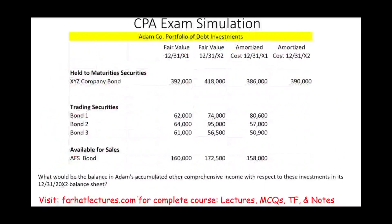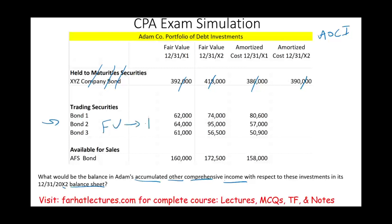Let's answer the second question: what would be in Adam's accumulated other comprehensive income with respect to these investments as of the X2 balance sheet date? We're looking at AOCI — accumulated other comprehensive income. Which securities affect AOCI? For held-to-maturity, the answer is no — they are reported at amortized cost and therefore don't affect AOCI or other comprehensive income. For trading securities, they are reported at fair value, but the corresponding account is the income statement, so they also don't affect comprehensive income or other comprehensive income.